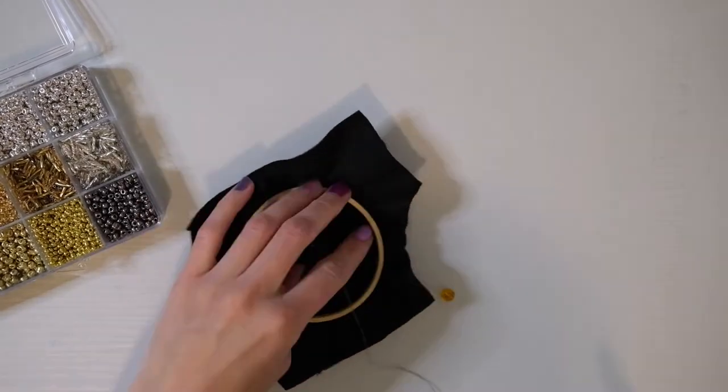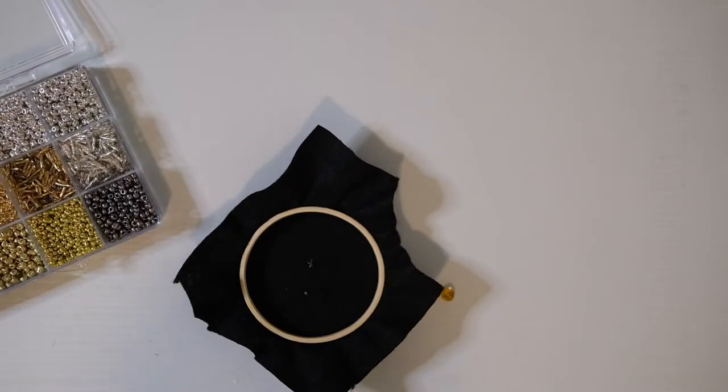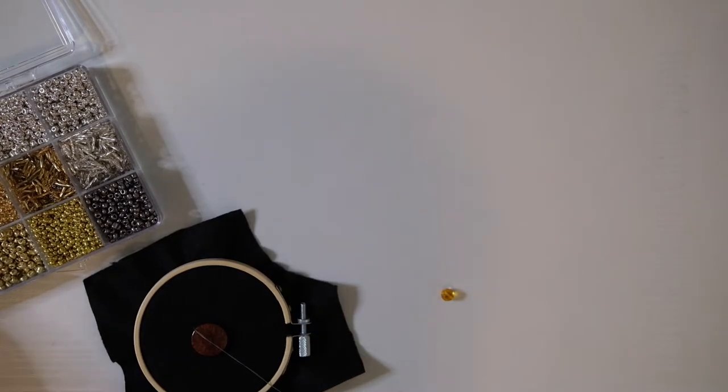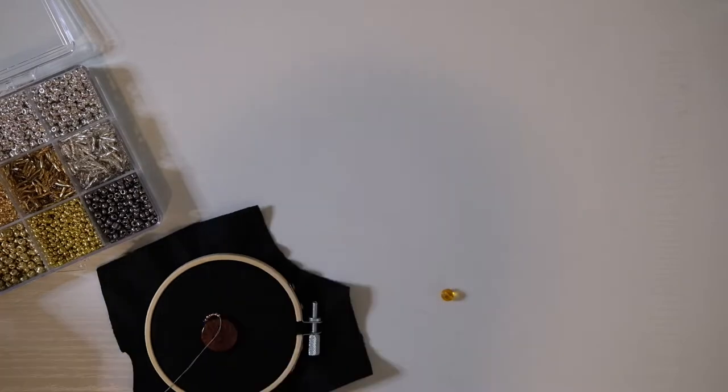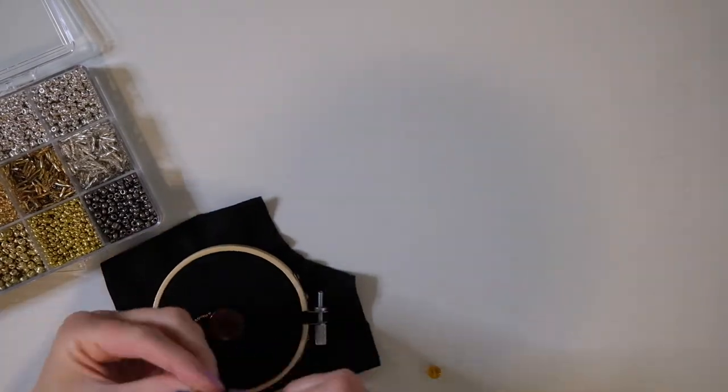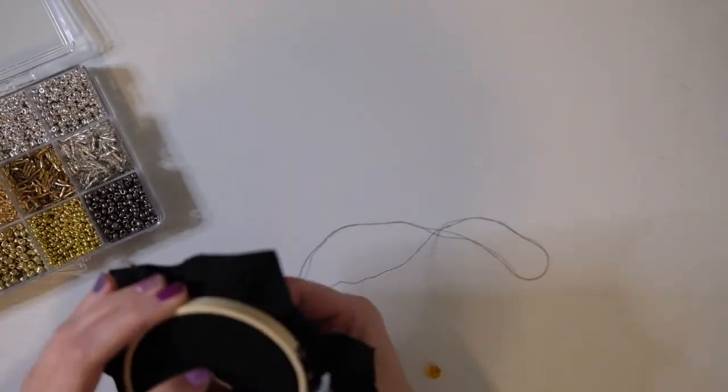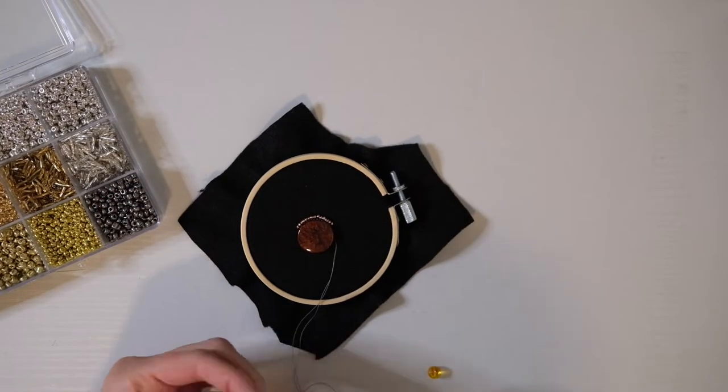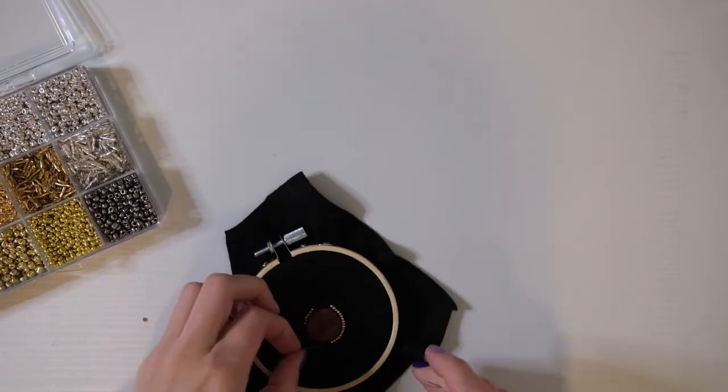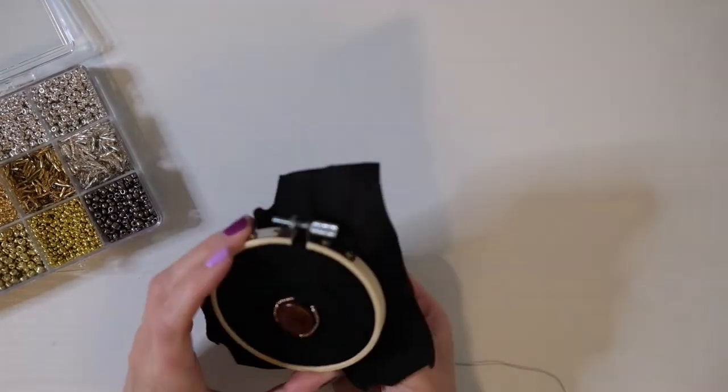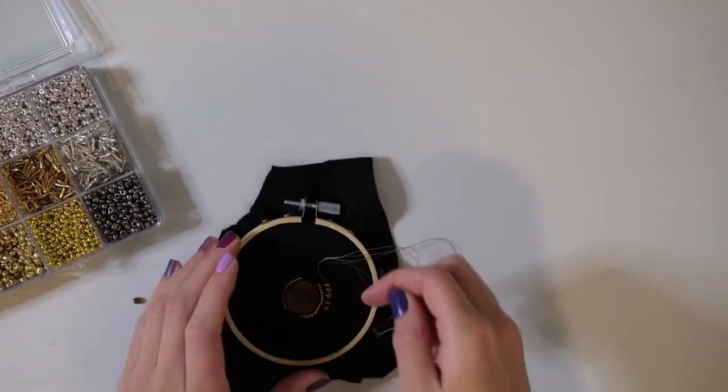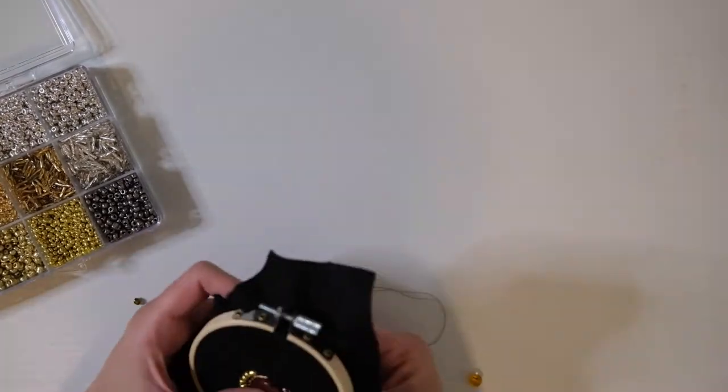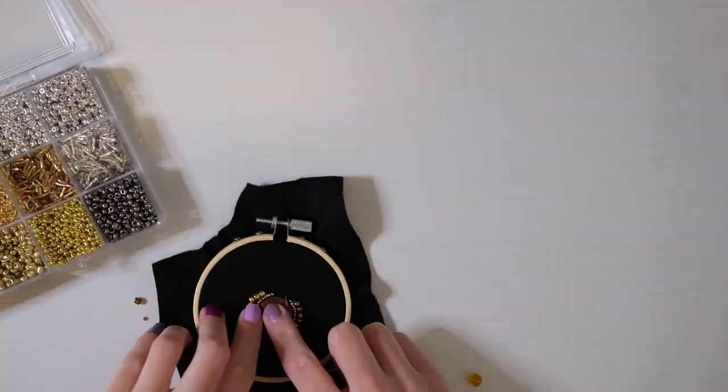Most of the seed beads in the mix were copper and gold tones, so I was focusing on using those for the pumpkin. I wanted to incorporate a lot of different size and shaped beads, so I was using various sizes of the round beads and the long beads in order to create the shape of the pumpkin.